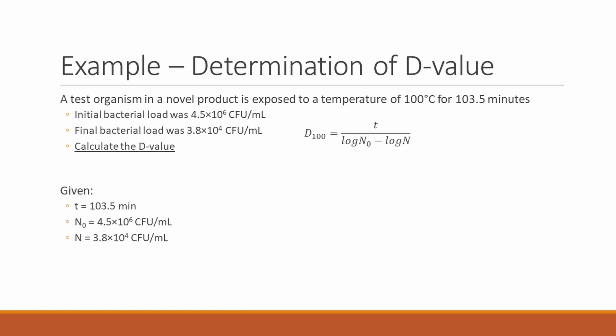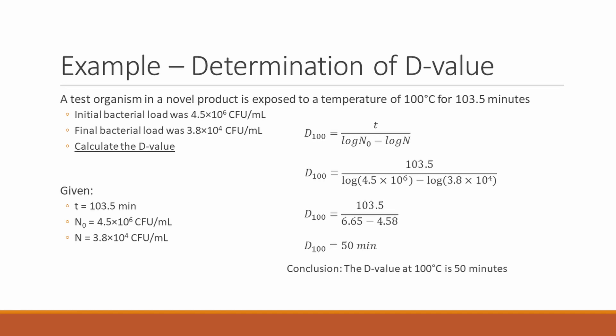Remembering our equation for the calculation of D values, we can use the given information. Time is 103 minutes, and N0 and N are 4.5 times 10 to the 6 CFU and 3.8 times 10 to the 4 CFU. After substituting these values into our equation, we will calculate a D value at 100 degrees Celsius of 50 minutes. That is to say that it would take 50 minutes at 100 degrees Celsius for this test organism to be reduced tenfold in this product.